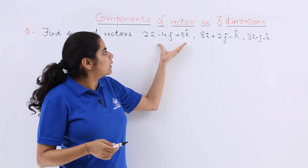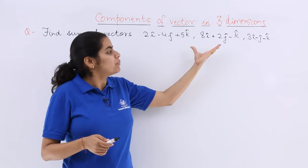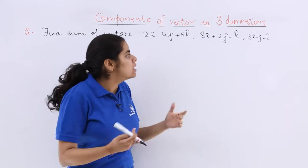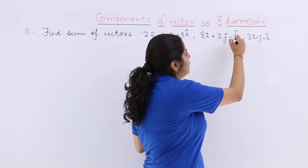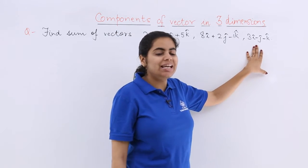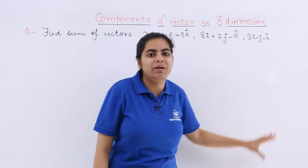The first is 2i cap minus 4j cap plus 5k cap. The second is 8i cap plus 2j cap minus k cap. Minus k cap means minus 1k cap if no coefficient is mentioned. The third vector is 3i cap minus 1j cap minus 1k cap.